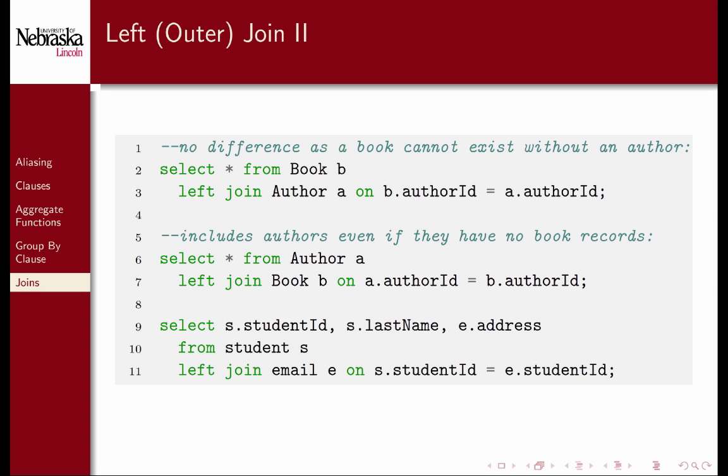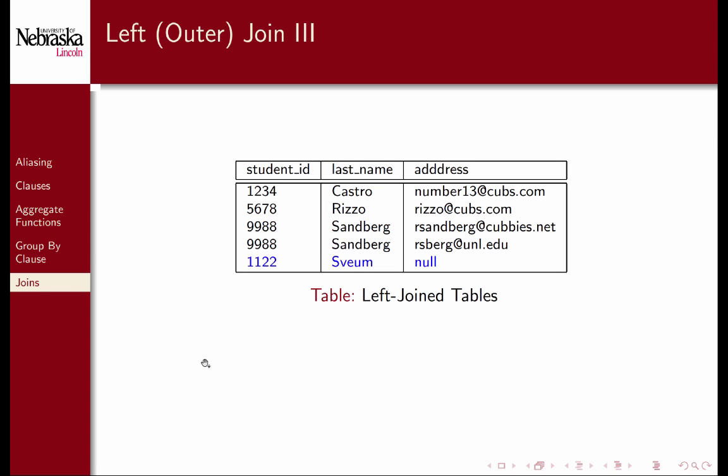Consider the previous example where Dale Swiem did not have a matching email record. With the regular join, his name did not appear in the results. However, with a left join, the record is preserved with the unmatched email record taking on a null value. Let's now also revisit our book example.